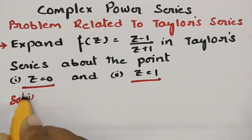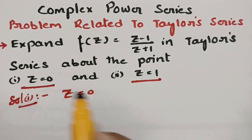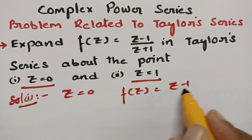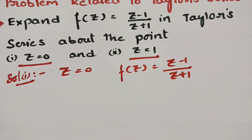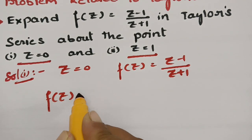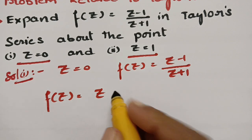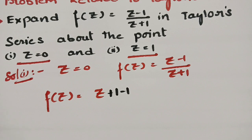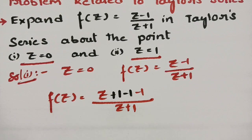For Solution 1, we consider z = 0. Our f(z) value is (z-1)/(z+1) and now we have to expand this. In order to expand, I am writing f(z) as z, adding 1 and subtracting 1 to balance, and there is already minus 1 in the numerator, by (z+1).